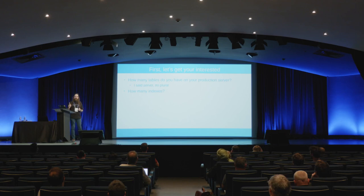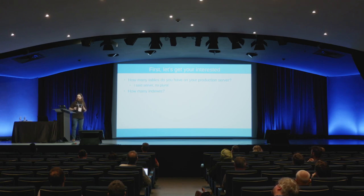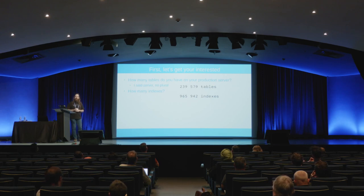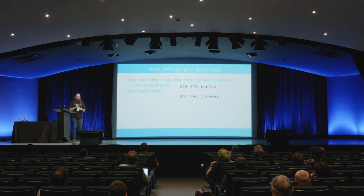To get things a bit more interesting, a quick question: how many tables do you have on your production server — not servers — and how many indexes? Right now on my main production system, about one hour ago, we were at 240,000 tables and almost 1 million indexes. If you do things with many tables and indexes, developers won't have much pain — it will all be pain for the DBA.